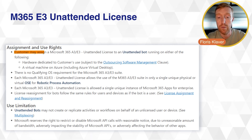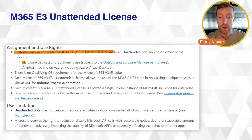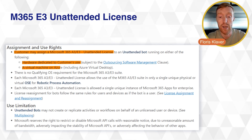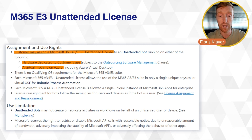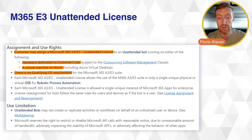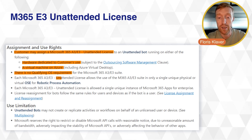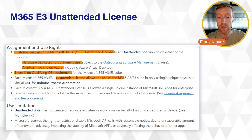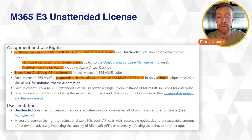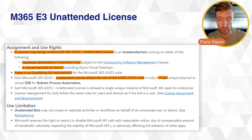You can assign a Microsoft 365 E3 unattended license to an unattended bot running either on hardware dedicated to your use or a virtual machine on Azure, including Azure Virtual Desktop if you're using it. There are no qualifying OS requirements to use the Microsoft 365 A3 or E3 suite. Each unattended license allows you the use of the M365 E3 suite in one single unique physical or virtual operating system environment for robotic process automation.